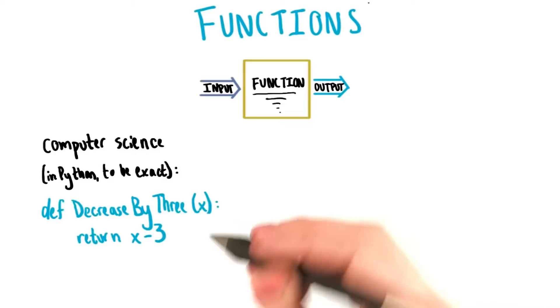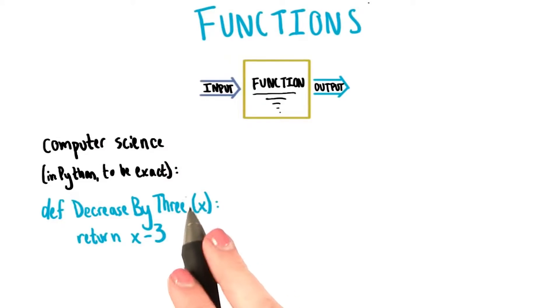Then we create a spot for the input, which we call x, and put it in parentheses. And then we define what the output is going to be with this return statement. And then we write the output right here, x minus 3.